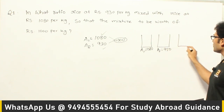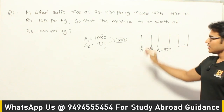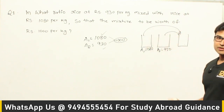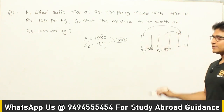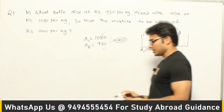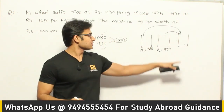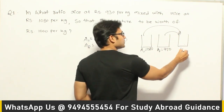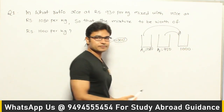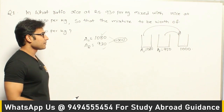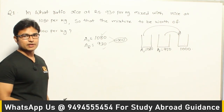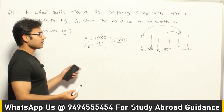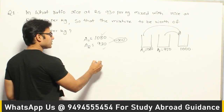We are going to form a new bag by taking some amount of rice from each, so that we can sell the new rice at a cost of 1000 rupees per kg. I told you earlier that we can use the diagram — I showed you the diagram in the earlier example.